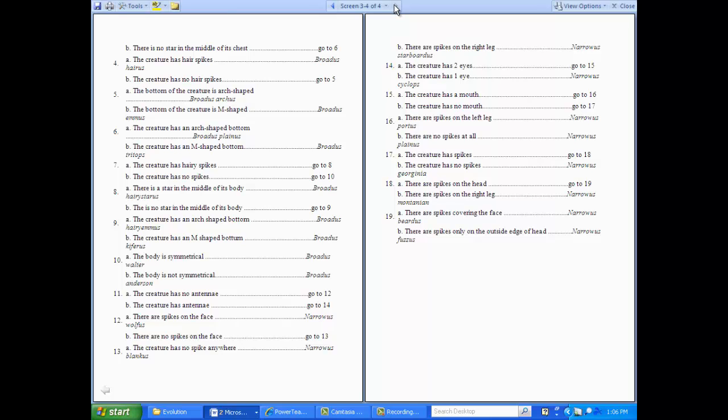Step four. The creature has hair spikes, or the creature has no hair spikes. Which one is it? No hair spikes. It's going to tell us to go to step five. We're going to go to step five.